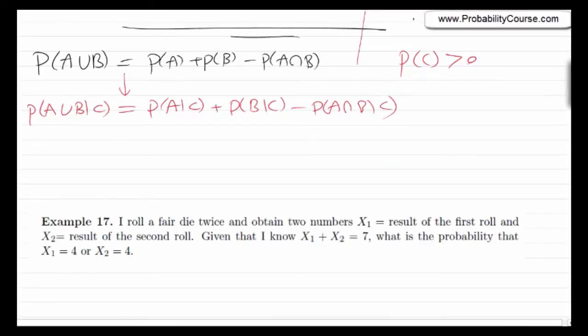I roll a fair die twice and obtain two numbers x1 and x2. Given that their sum equals 7, what is the probability that at least one of them equals 4? I suggest you solve this before watching the solution.